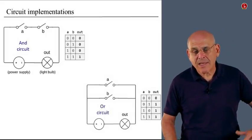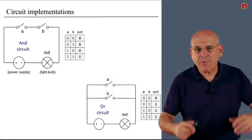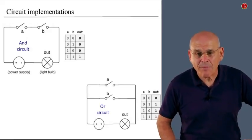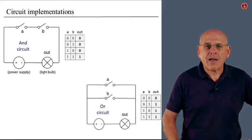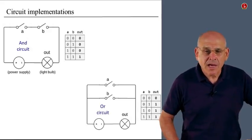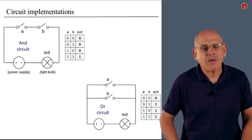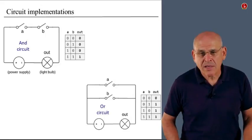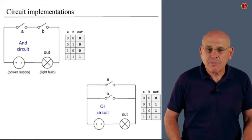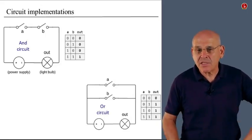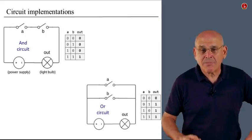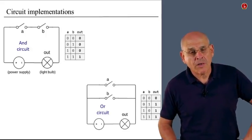What about OR logic? Well, once again, if I have to build a circuit implementation of OR, I can realize it using this particular architecture. In here, it takes only one latch to close the circuit and turn on the light bulb. And once again, this is consistent with the desired abstraction of an OR circuit.